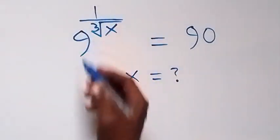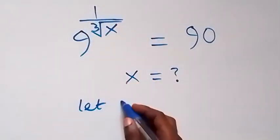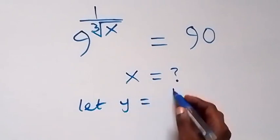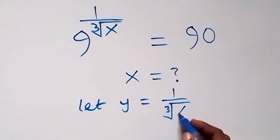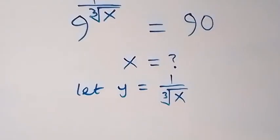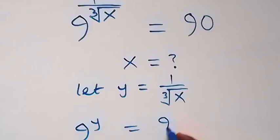Let's use a letter to represent the power. So let y be equal to 1 over the k-th root of x. Then the equation we have now can be written as 9 raised to the power y equals 90 from here.